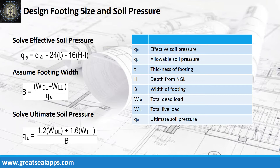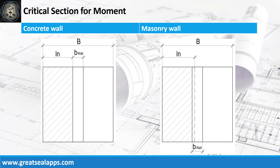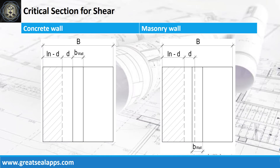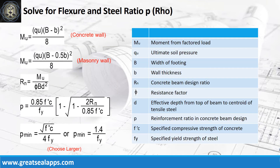Next, solve the footing width to obtain the ultimate soil pressure, then review the critical section diagrams for moment evaluation and for shear evaluation. Solve the maximum moment using the footing width and wall thickness.